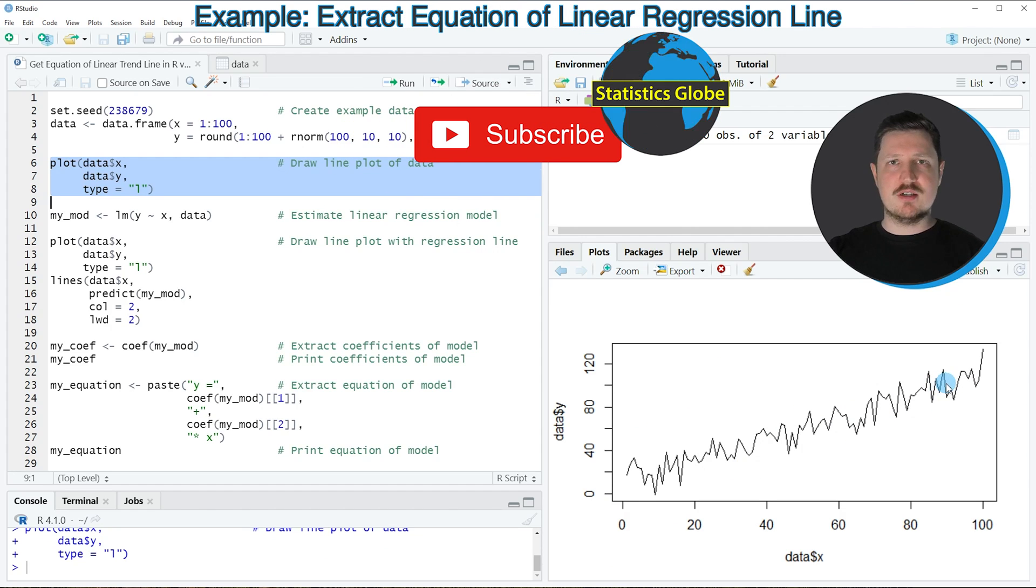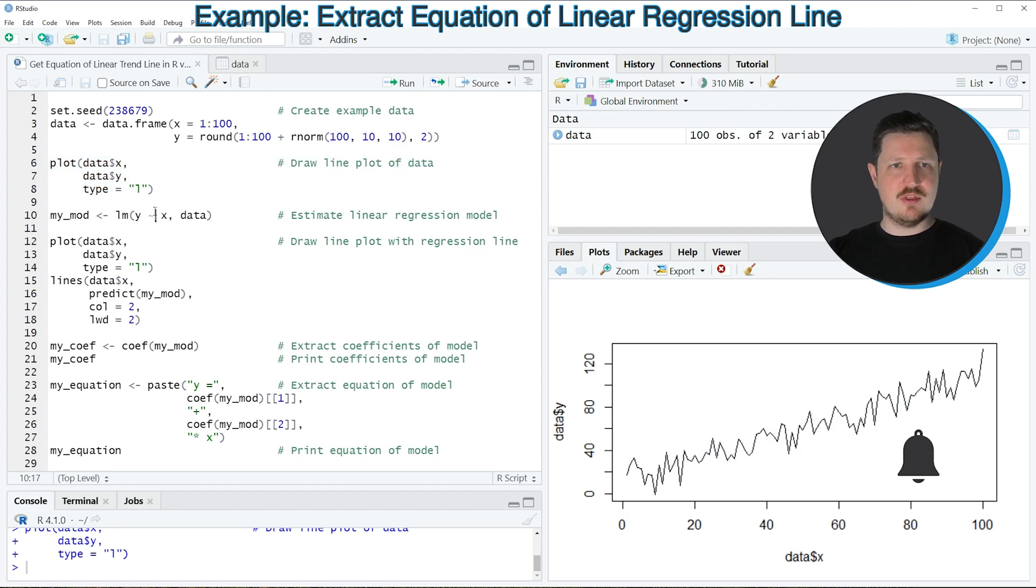Now if you want to add a trend line to this plot, then we have to estimate a linear regression model as you can see in line 10 of the code. In this line I'm applying the LM function to our two variables Y and X, using variable Y as target variable and variable X as predictor variable. I also need to specify the name of the data frame, which is called data, and then I'm storing the output of the LM function in a new data object called myMod.